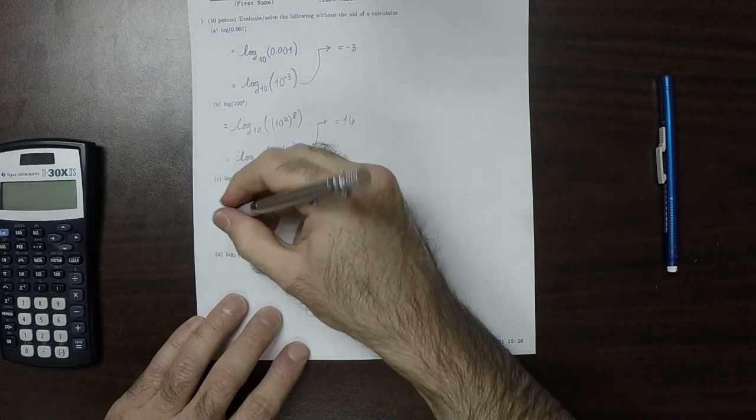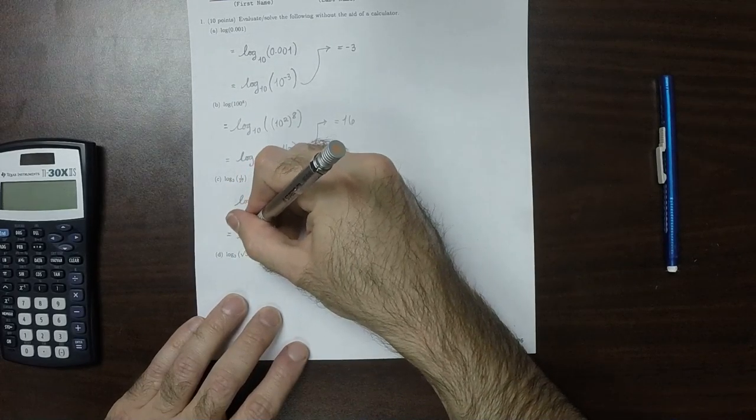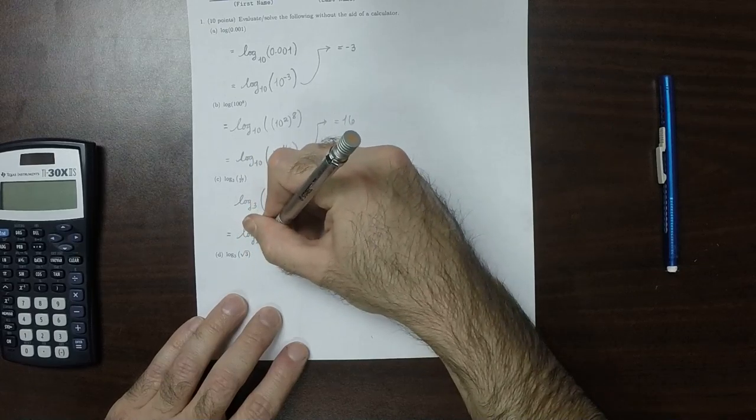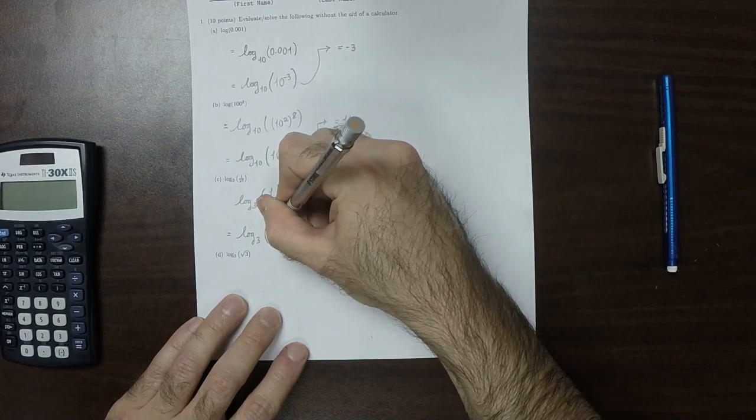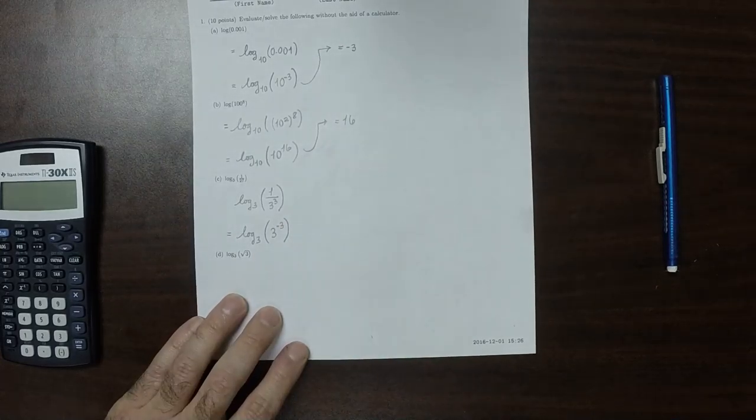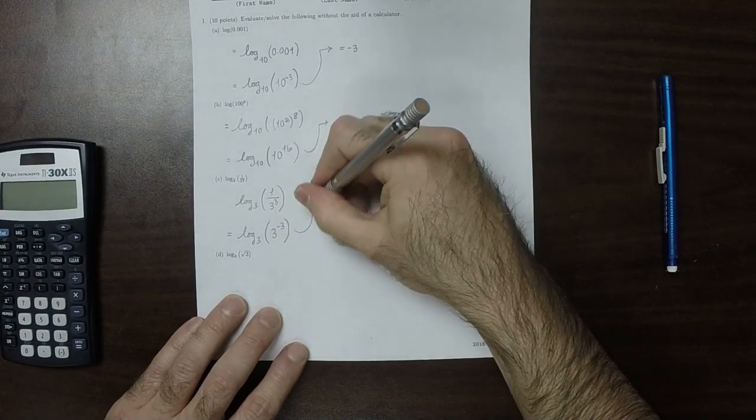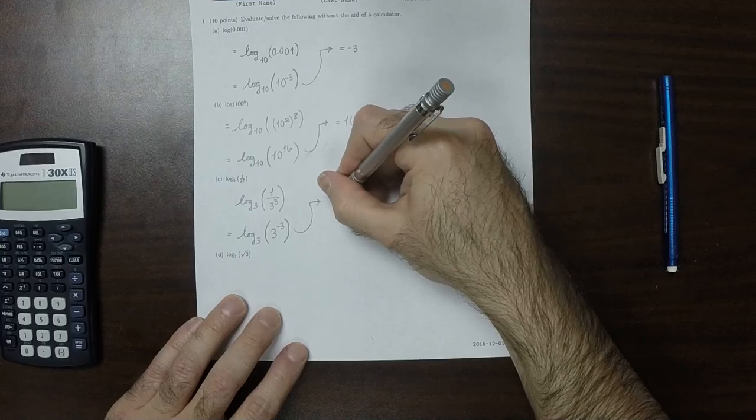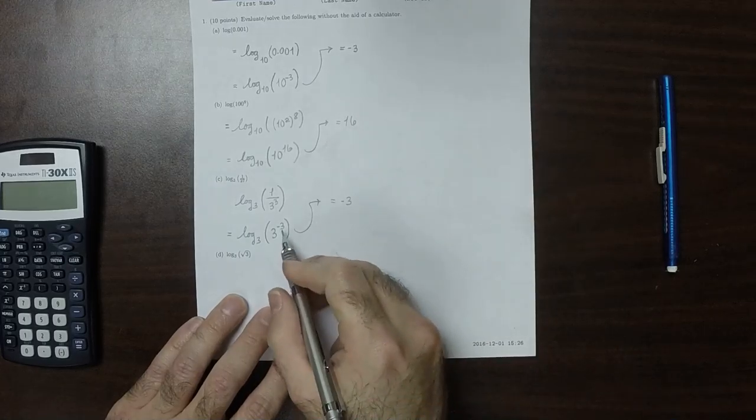And then 1 over 3 to the 3rd can be written as 3 to negative 3, by moving that up and negating the exponent. But then the answer is the exponent.